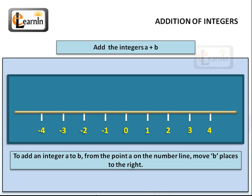Therefore, to add an integer a to another integer b, we have to get to the point a on the number line, and then move b places to the right.